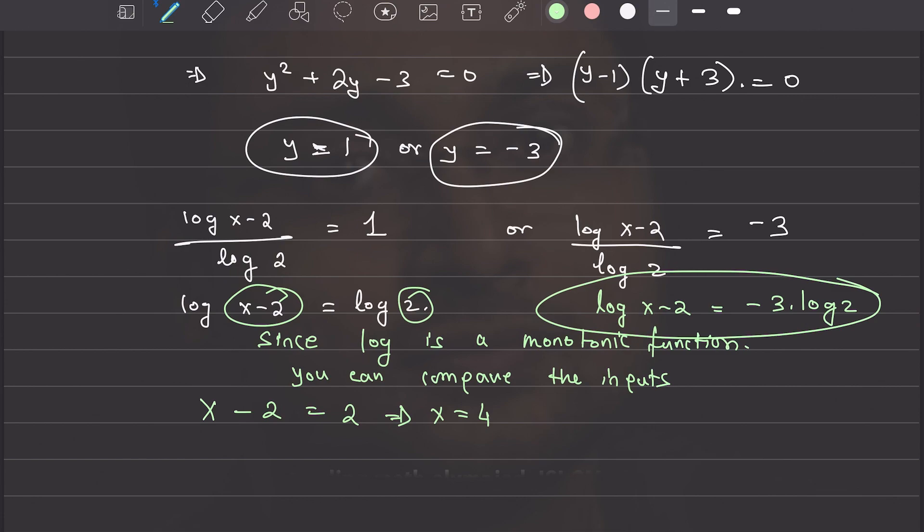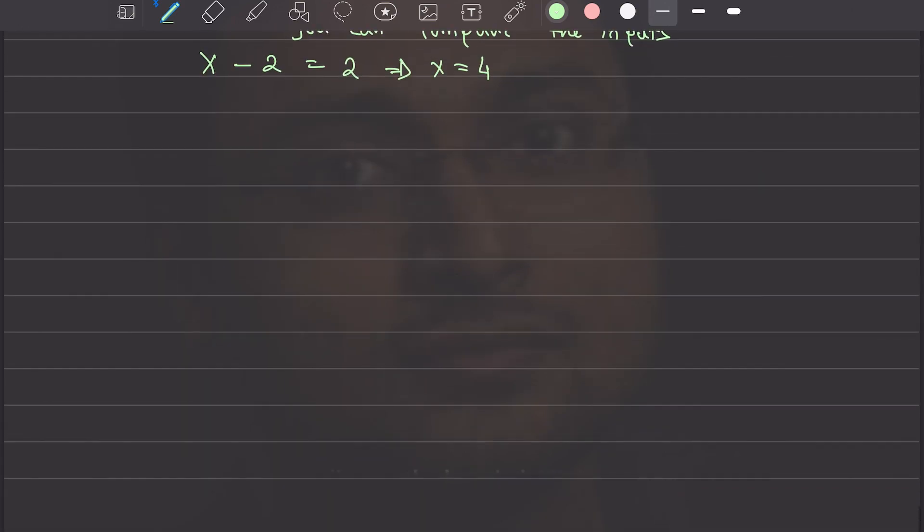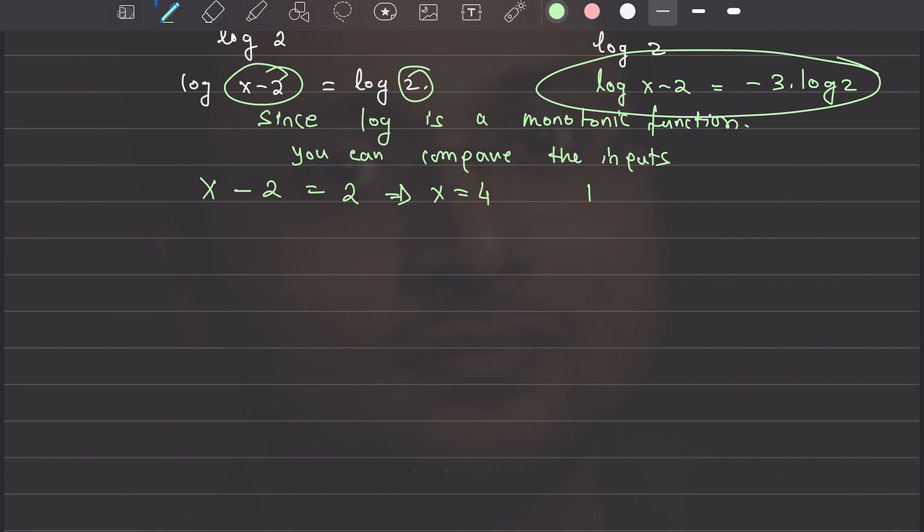The second one tells you that log of x minus 2 equals to negative 3 log 2, or log of 2 to the power of negative 3. So, x minus 2 is equals to 1 over 8. I'm just comparing the argument part of this. So, we have x is equals to 2 plus 1 over 8, or 17 over 8.